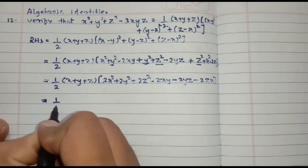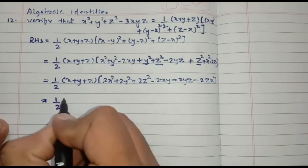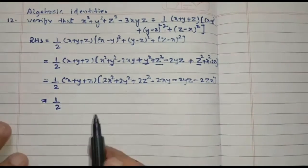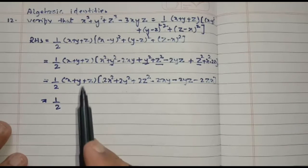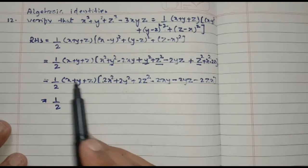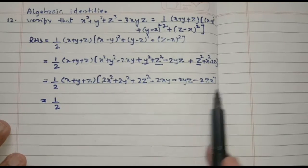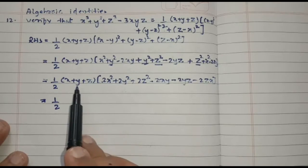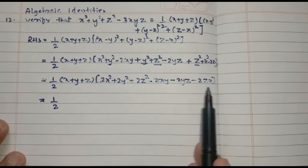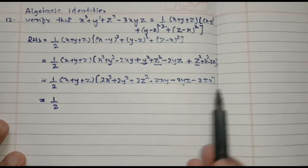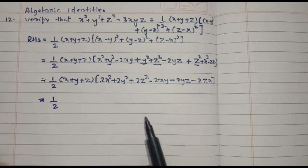Now 1 by 2 into — we open the bracket by multiplying x with all the values, then y with all the values, then z with all the values.